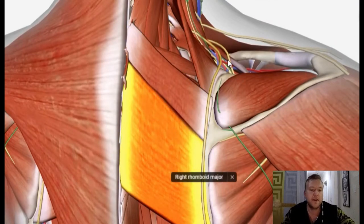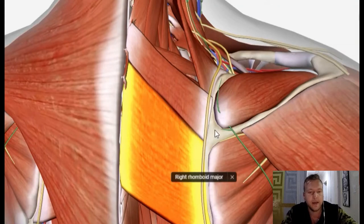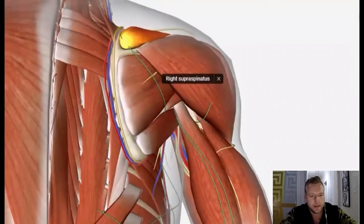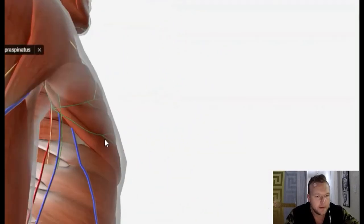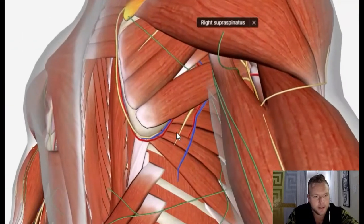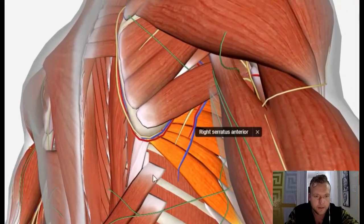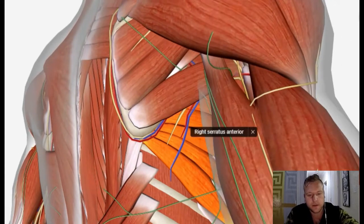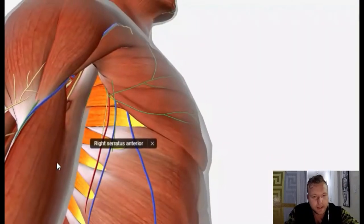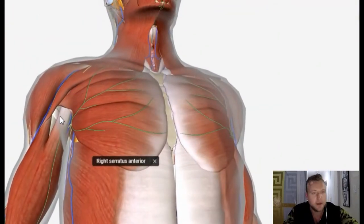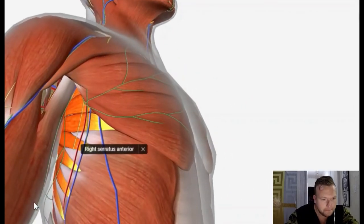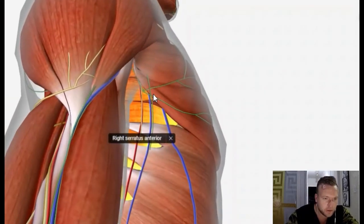You can see it sits directly on the scapula, and if we get rid of the lat here we can actually see the serratus anterior. Let me just grab a good angle of this. There we go. The serratus anterior sits right underneath the scapula and as you can see it attaches to the ribs. All those finger-like muscles that come across sit right on these ribs all the way down.